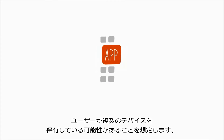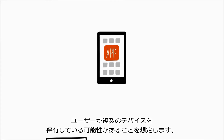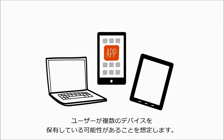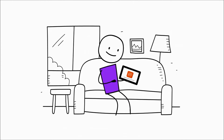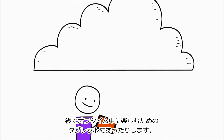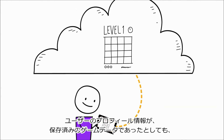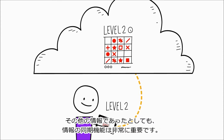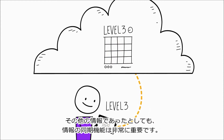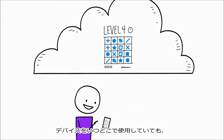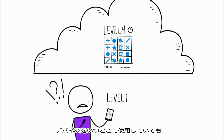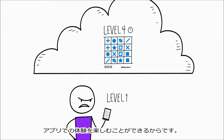When you're building an app, you know that your users probably have more than one device — maybe a smartphone for the work commute and a tablet for enjoying downtime later. Being able to sync your user's profile information, whether that's save game data or some other kind of information, is really important so that users can have a great experience with your app whenever and wherever they use it, regardless of which device they use.